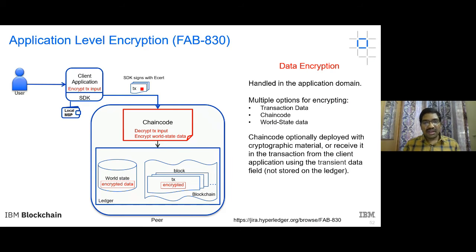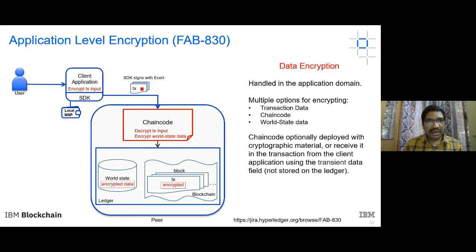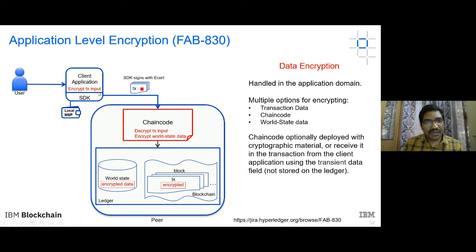Application-level encryption in Hyperledger Fabric: in the first half, we saw that transactions are submitted in plain text format, so all channel members who are participants of the network are able to access the entire data. Encryption is one additional confidentiality mechanism where the transaction input can be submitted in encrypted format to the chaincode.